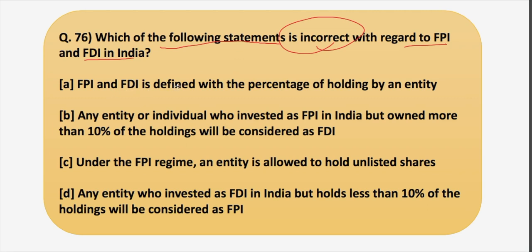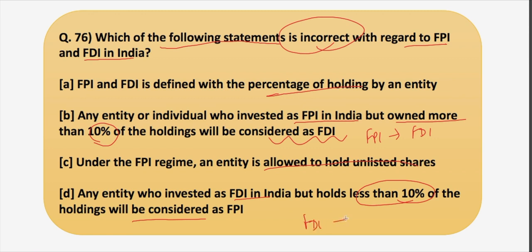Option one says FPI and FDI is defined with the percentage of holding by an entity. Option two says any entity or individual who invested as FPI in India but owned more than 10 percent of the holdings will be considered as FDI. Option three says under the FPI regime an entity is allowed to hold unlisted shares. Option four says an entity who invested as FDI in India but holds less than 10 percent of the holding will be considered as FPI. In both these cases 10 percent is the threshold limit set for the classification.